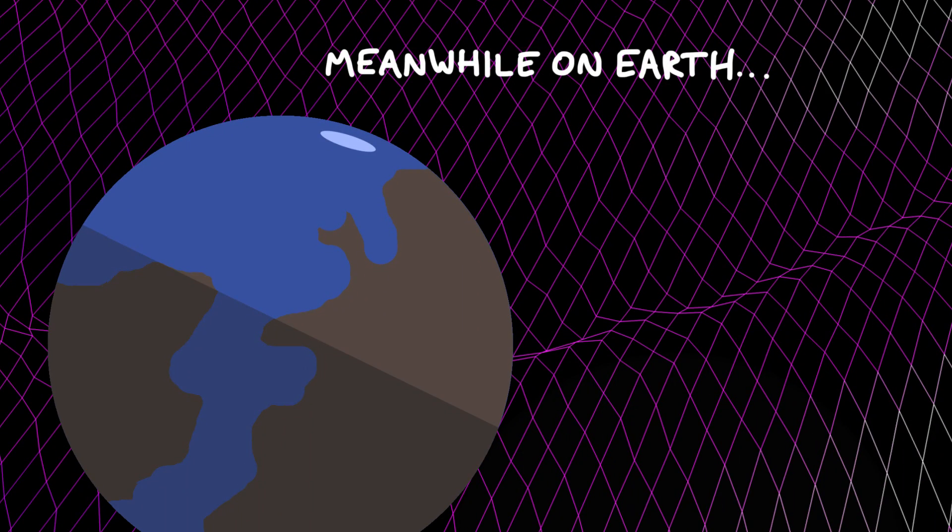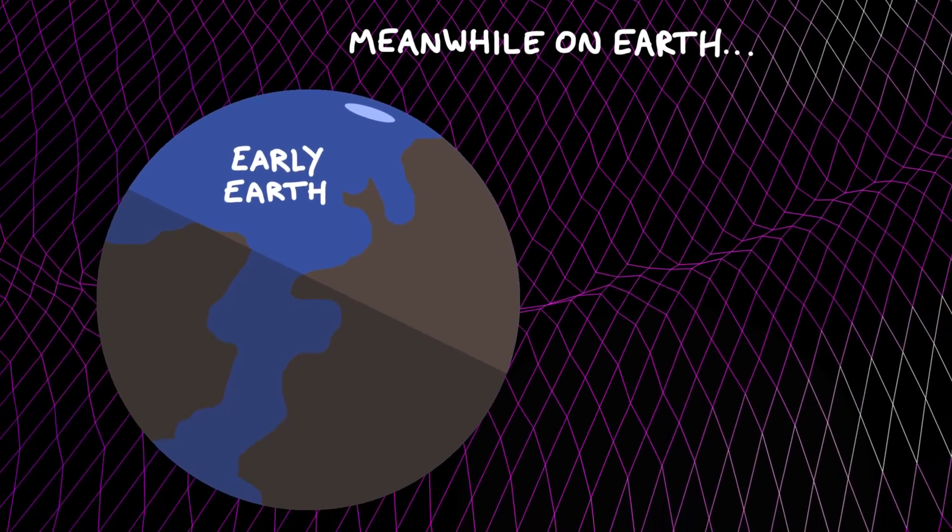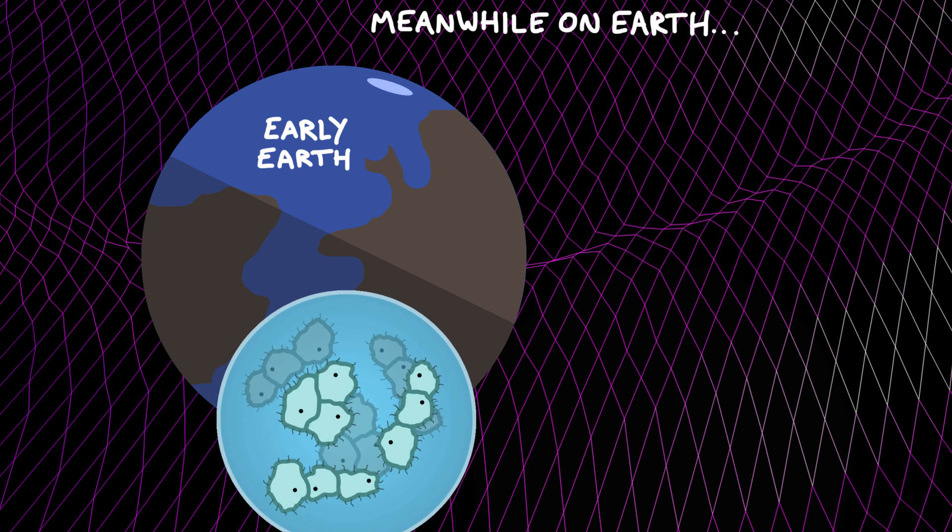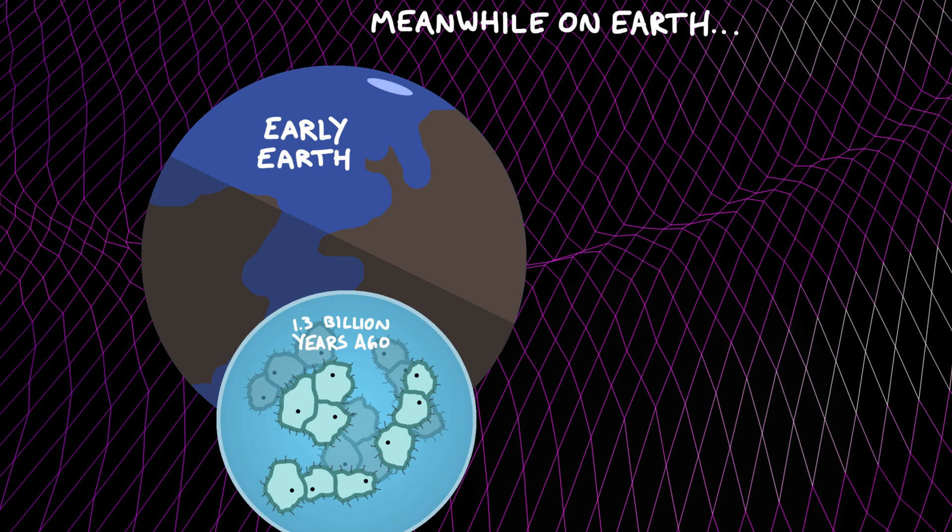Meanwhile, on Earth, at this exact time, our planet was looking very different to what we see now. It was a barren wasteland. There was no grass or trees. In fact, no plants or animals at all. Life at this stage had only come as far as microscopic, multicellular creatures that lived in the sea.